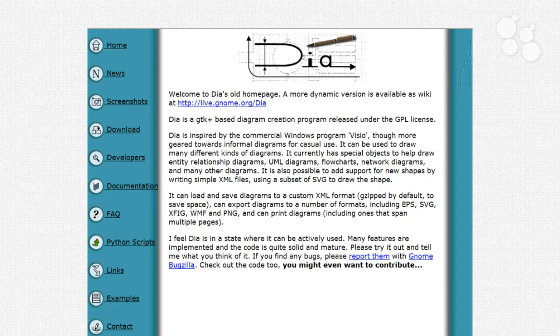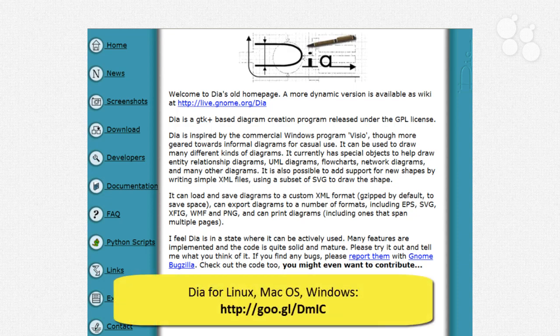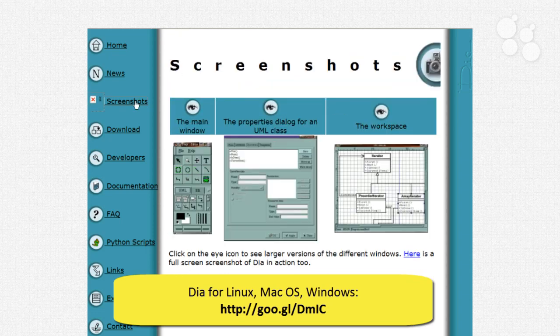Now, as far as truly open source variants or alternatives to Visio are concerned, there are several. The one that I personally prefer is called Dia, and it's at projects.gnome.org forward slash dia.